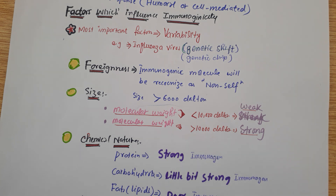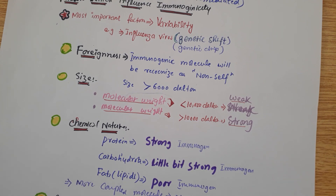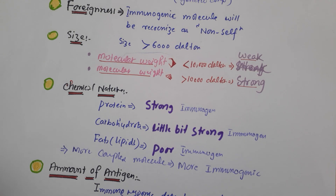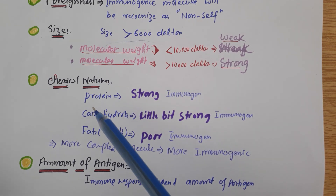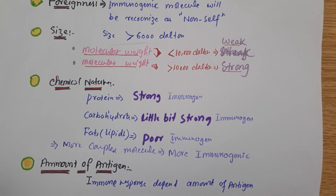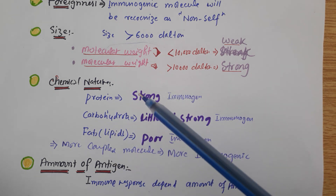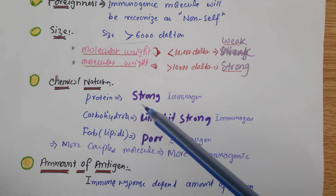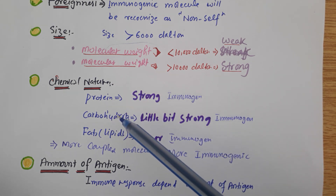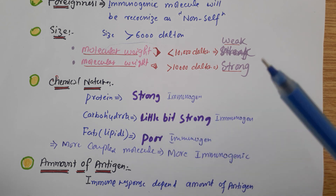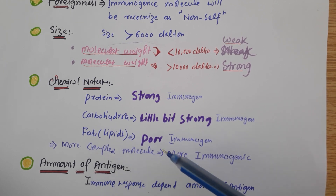The chemical nature can also be important. As I explained in the last video, antigens are proteins, carbohydrates, and fats — lipids. Proteins are strong immunogens and the majority of immunogens are proteins. Carbohydrates are a little bit strong immunogens. Fats and lipids are very poor immunogens.